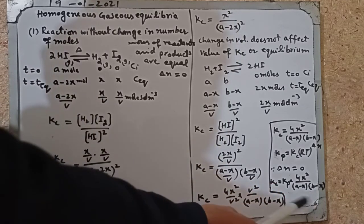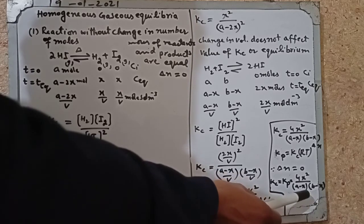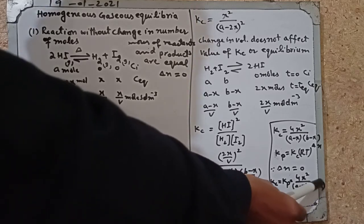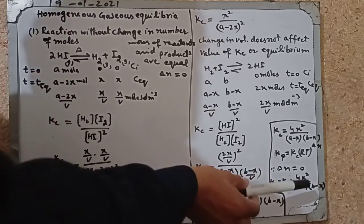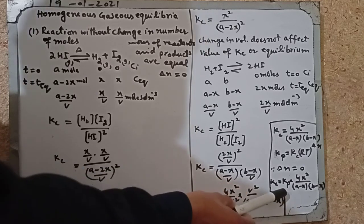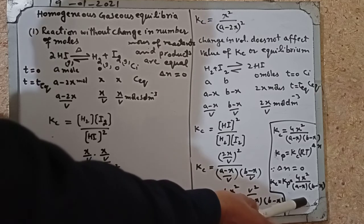Therefore, Kp and Kc do not depend upon the pressure or the volume because they do not involve any term for total pressure or the volume. Therefore, change in pressure or change in volume does not affect the equilibrium constant and the equilibrium position.